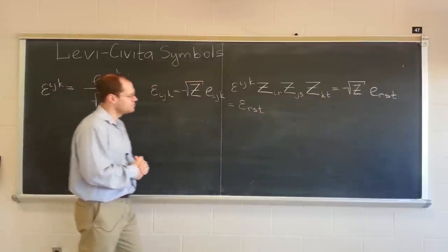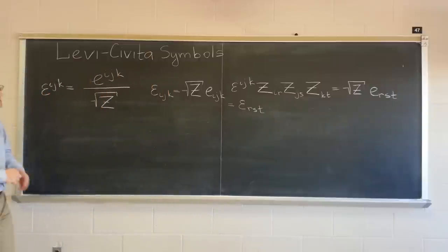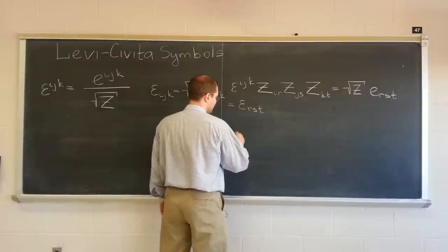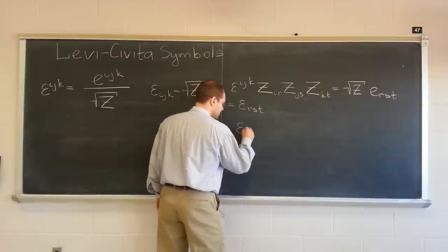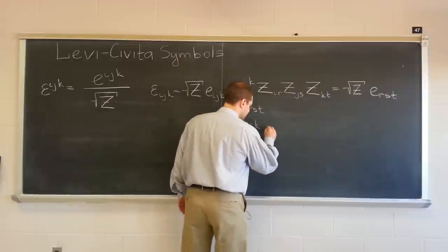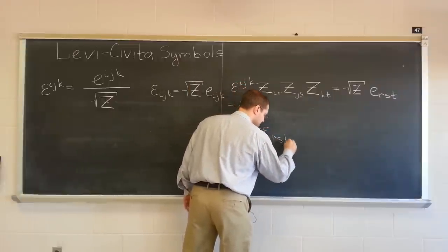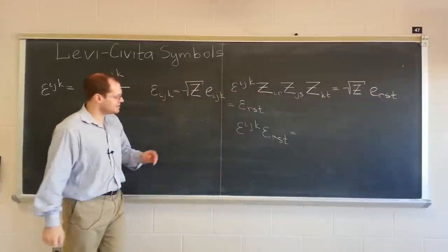Relationship number two is let's combine the two Levi-Civita symbols. This is really easy to see. I'll leave it on this side of the board. If we combine epsilon^ijk, in other words, multiply it by epsilon_rst. Now let's do a little bit of analysis in our head.